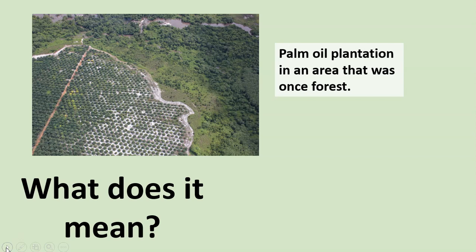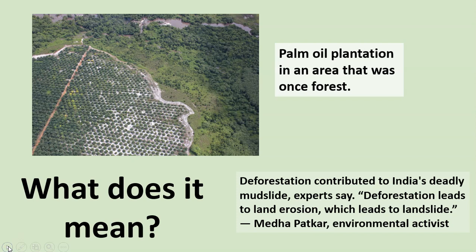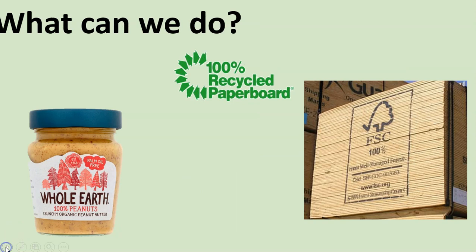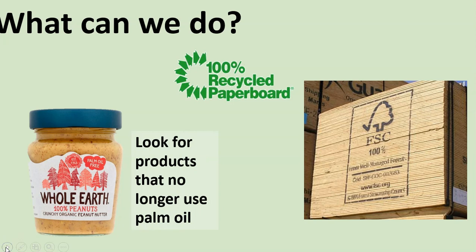Huge areas of forests have been burnt down to grow oil palms, and basically that palm oil is used in all sorts of different areas and different foods. It is actually even illegal to grow the oil palms but people do it anyway. If you imagine huge areas of forests being burnt down, where are all the living creatures going to go? It's also contributed to deadly mudslides in some areas. A recent mudslide in India killed a lot of people due to heavy rain and deforestation, because the mudslide was due to the soil eroding.